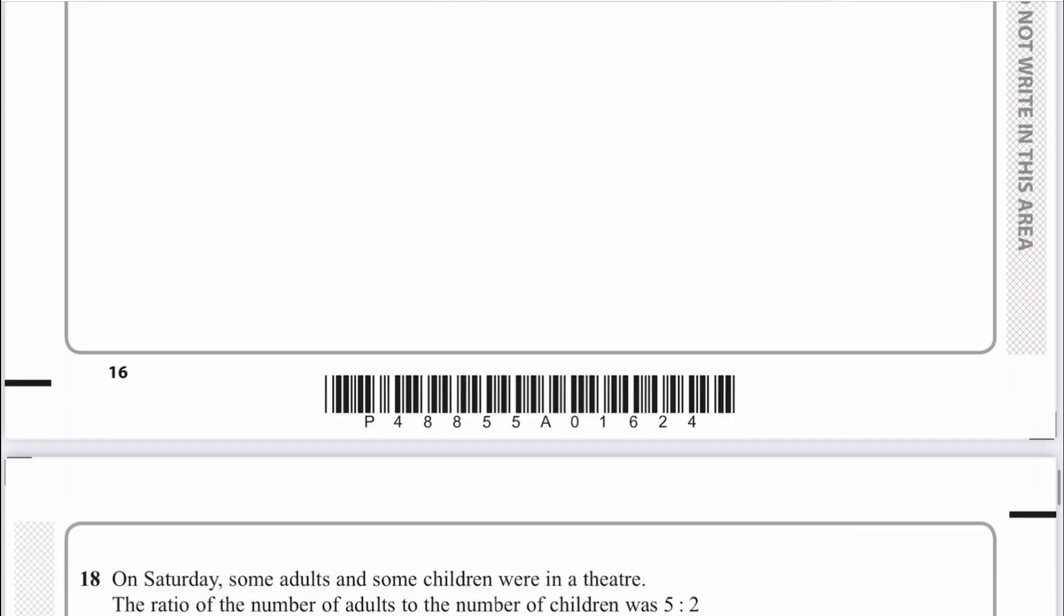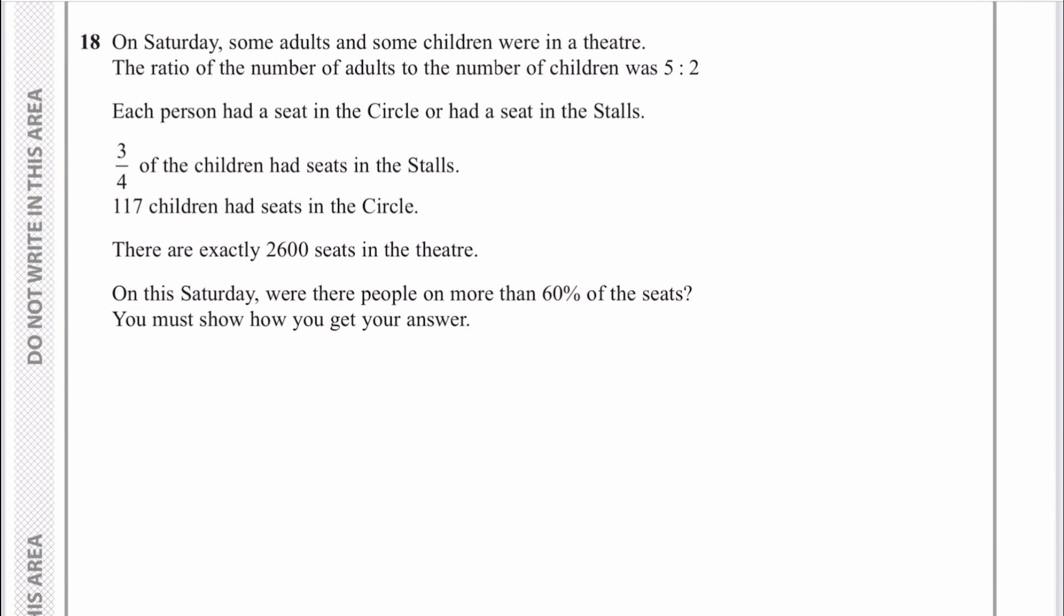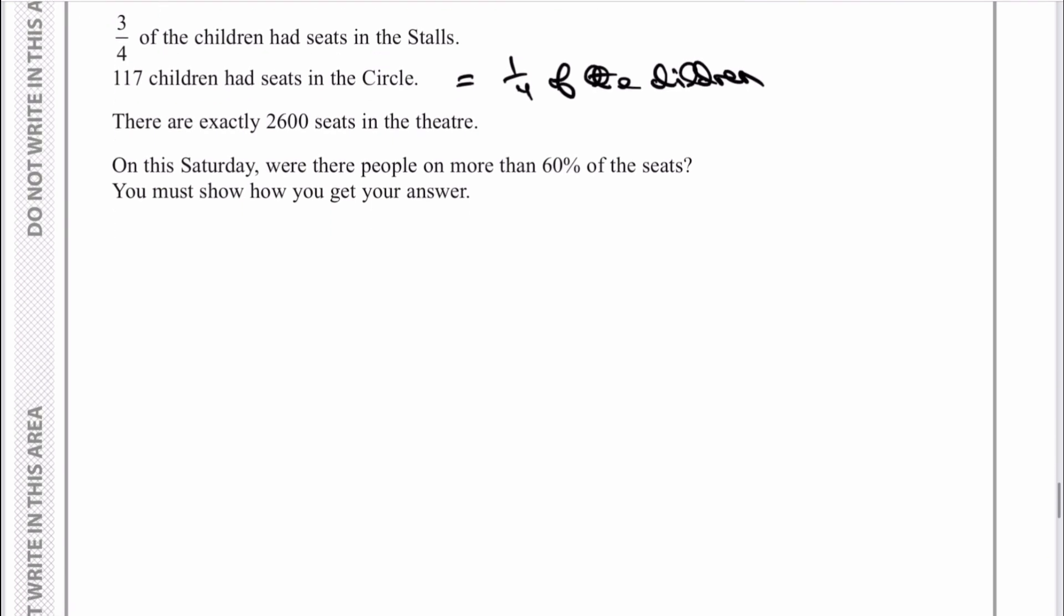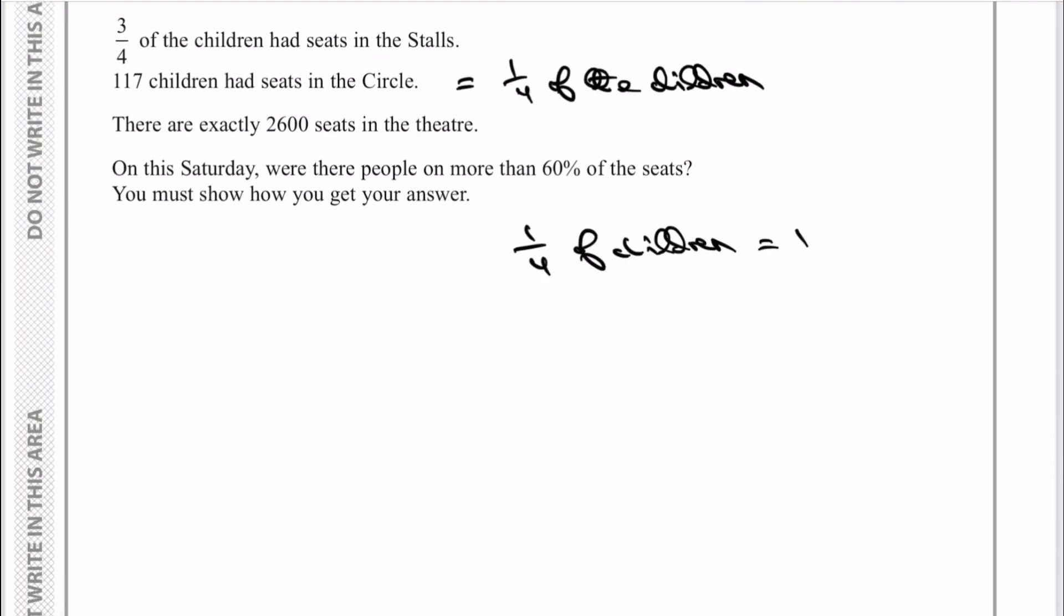Let's look at question 18, which is quite wordy and difficult to work through. The best thing would be to stop the video and have a go. One of the key issues is that three quarters of the children had seats in the stalls and 117 had seats in the circles, which equals a quarter of the children at the theatre. If a quarter equals 117, then four quarters, or all the children together, equals 117 × 4 = 468 children.